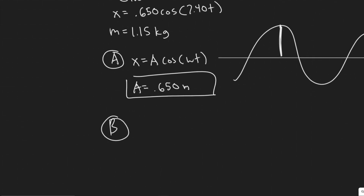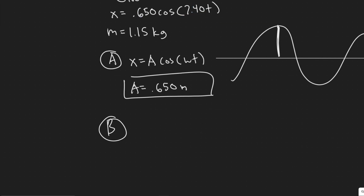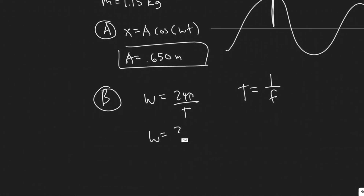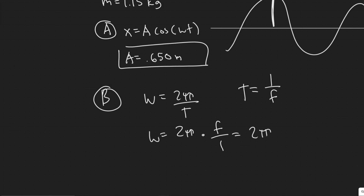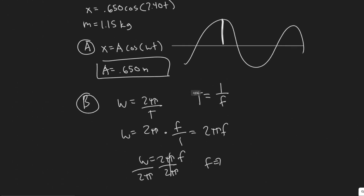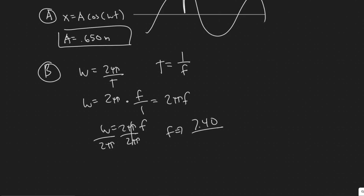For part B, we want the frequency. We can derive it from the angular frequency. The formula is omega equals 2π over T, where T is the period. Since T equals 1 over frequency, substituting gives omega equals 2π over (1/f), which simplifies to omega equals 2π·f. Solving for frequency: f equals omega divided by 2π. Our angular frequency is 7.40, so we divide that by 2π.